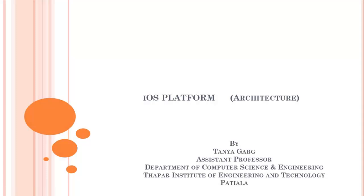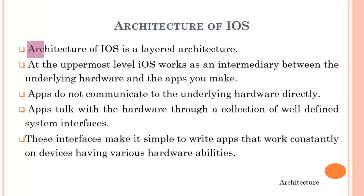Hello everyone. In today's lecture we will discuss the architecture of the iPhone operating system. The architecture of iOS is a layered architecture, and there are four layers. At the uppermost level, iOS works as an intermediate between the hardware and the applications that users make. The applications do not communicate directly to the hardware; they communicate with each other by using the system interfaces.